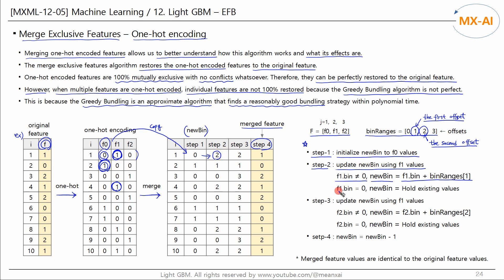If the value of F1 is 0, new bin retains its existing value. For the second data point, the value of F1 is 0, so new bin retains the existing value. In this way, update all values of new bin.